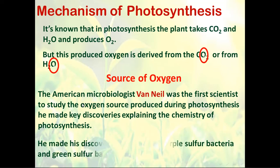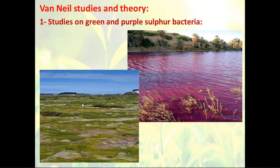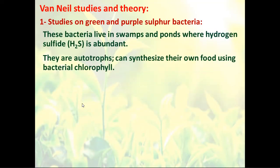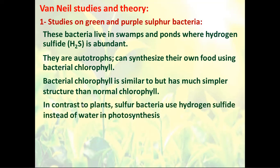The first experiment he did was on bacteria called purple sulfur bacteria or green sulfur bacteria. As you can see here in the photo, they are bacteria that live in swamps, and they are autotrophs — they can synthesize their own food. But instead of using water, they use hydrogen sulfide, which is abundant in the swamps they live in. And instead of having plastids, they have bacterial chlorophyll.